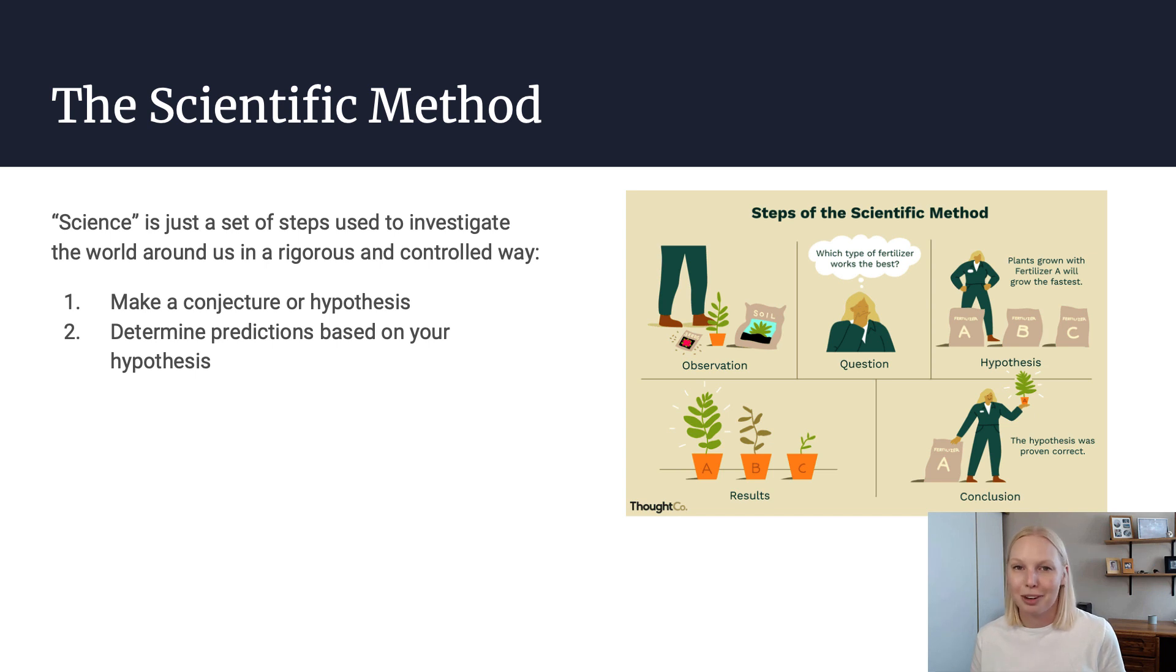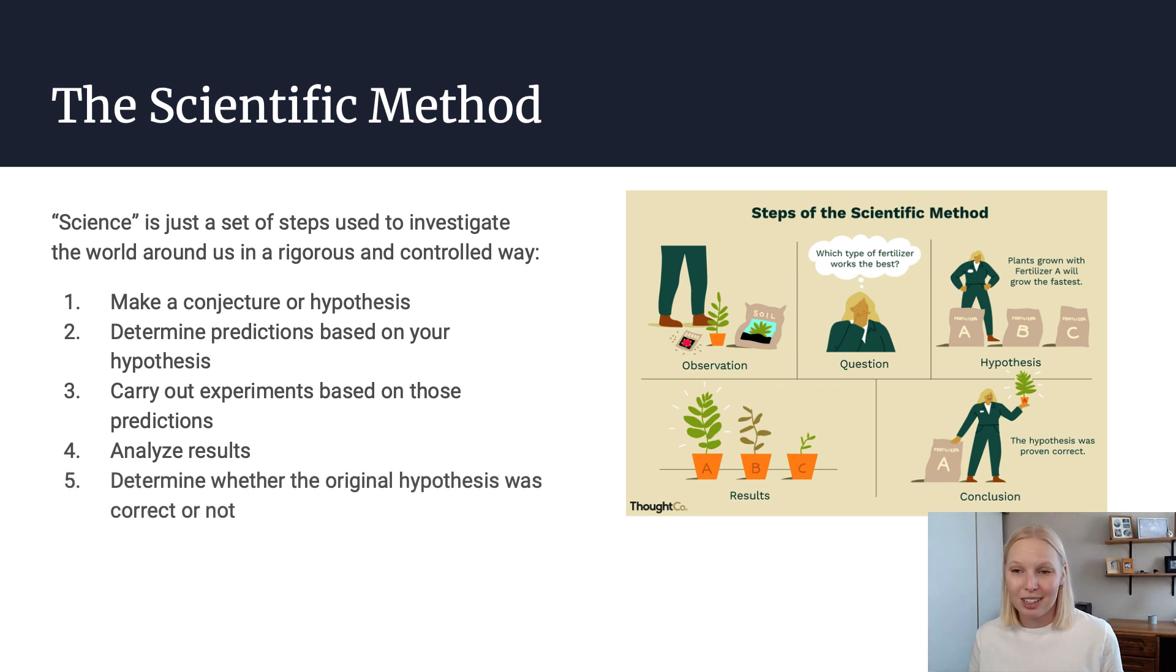Then a scientist or any person who is sort of going about the world doing science, they'll determine predictions based on their hypothesis. So they might guess, I think fertilizer B is going to make my plant grow the fastest. So I'm going to test fertilizer B against other fertilizers. So they're carrying out this experiment where they're testing different fertilizers on the same plant. And they're going to test their prediction and see if they were right. They're going to analyze the results and they're going to determine whether their original hypothesis was correct or not. So in this case, if they said, my hypothesis is that fertilizer B is going to help my plant grow the fastest, it actually turns out that fertilizer A was the most successful. In that case, their hypothesis was wrong, but they still learned something. Just because the hypothesis was wrong doesn't mean that it wasn't a useful experiment. Obviously, they learned that fertilizer A was the best choice for them.